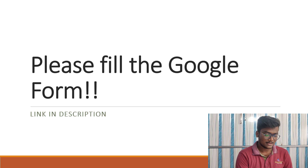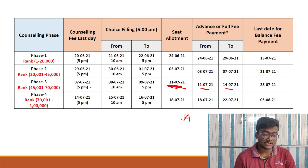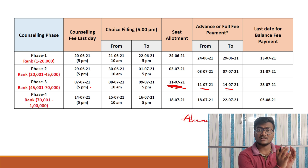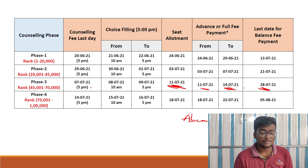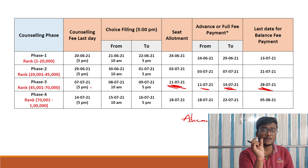Coming to VIT phase 3 details — today's date is the 11th and we got seat allotment today. From today till the 14th, you will have time to pay the advance fee. The total fee has two parts: advance fee and balance fee. The deadline to pay the balance fee is the 28th. If you don't pay the advance fee before the 14th, your seat will be cancelled. If you don't pay the balance fee before the 28th, your seat will also be cancelled.